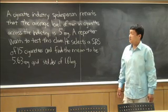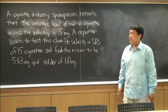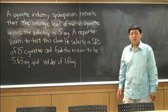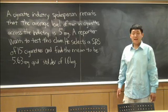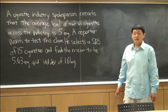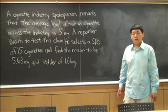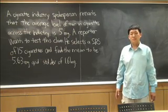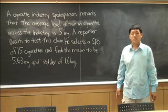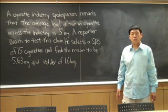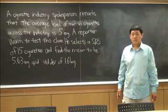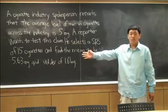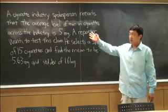Let's look at the problem. A cigarette industry spokesperson remarks that the average level of tar in cigarettes across the industry is 5 milligrams. A reporter wants to test these claims. He selects a simple random sample of 15 cigarettes and finds the mean to be 5.63 milligrams per cigarette with a standard deviation of 1.61 milligrams per cigarette. This is an example of a hypothesis test where we need to test a sample mean against an unknown population mean.